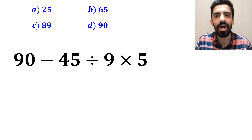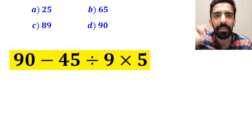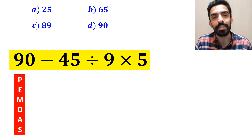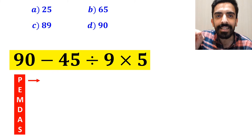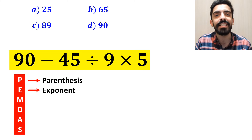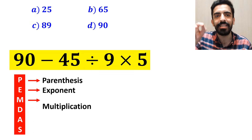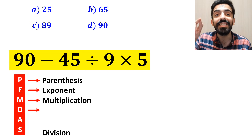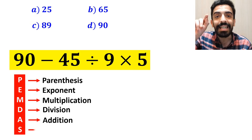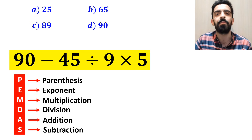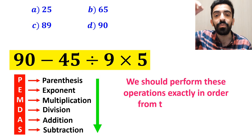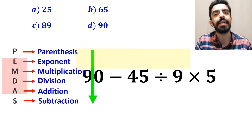Alright, now let me show you how to solve this expression properly. To solve this question, we must follow a rule called PEMDAS. In this rule, P stands for parentheses, E stands for exponent, M stands for multiplication, D stands for division, A stands for addition, and S stands for subtraction. We should perform these operations exactly in order from top to bottom.